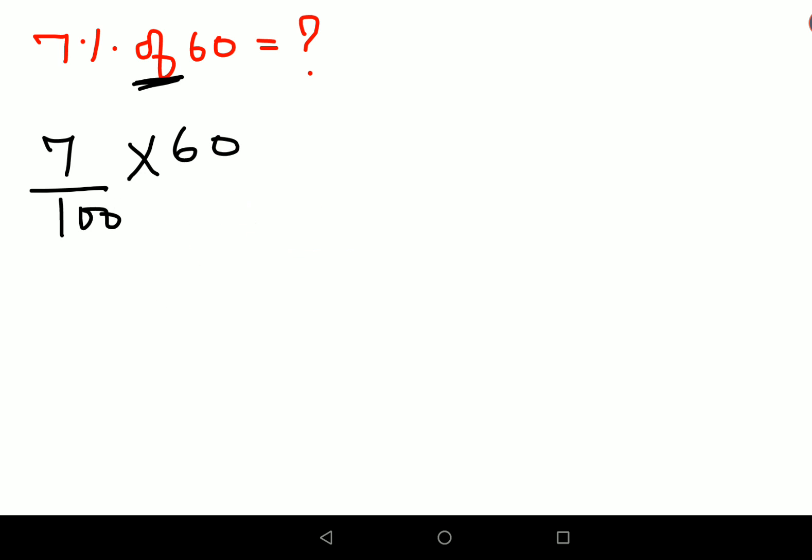Okay, so now cancel this. Now we have 42 upon 10. Please don't make the mistake of simplifying this by 2 and all of that. No, you can easily write this in decimal form, that is 4.2.